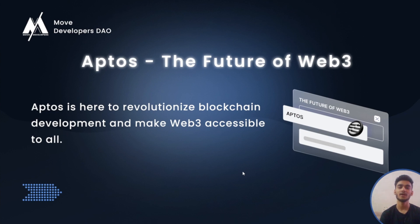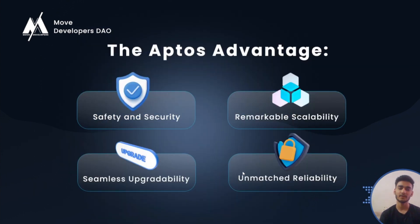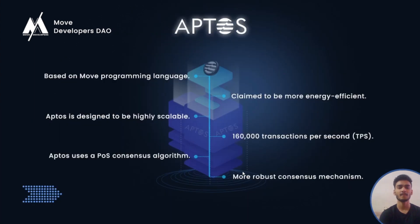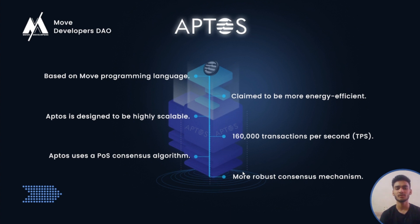Now, what is Aptos? Aptos is a layer one blockchain similar to Ethereum and Solana, but provides some other important advantages like safety and security, remarkable scalability, seamless upgradability, as well as unmatched reliability. Aptos is based on Move programming language, so we will write our smart contracts in Move. It is claimed to be much more energy efficient as it uses a proof-of-stake consensus algorithm, and Aptos is designed to be highly scalable, providing a transaction-per-second speed of around 160,000.